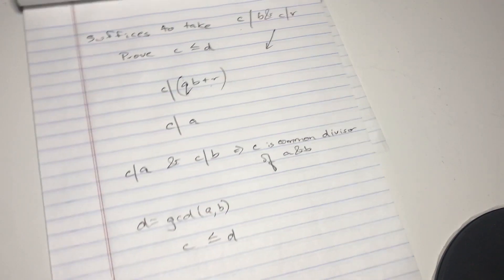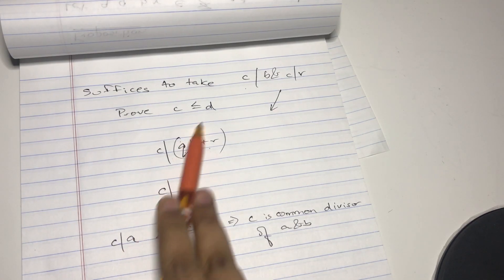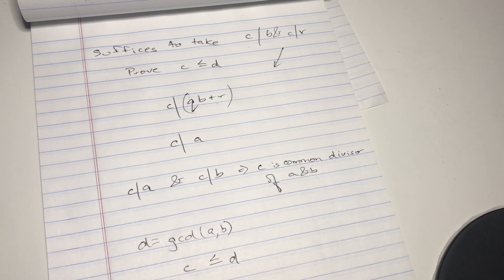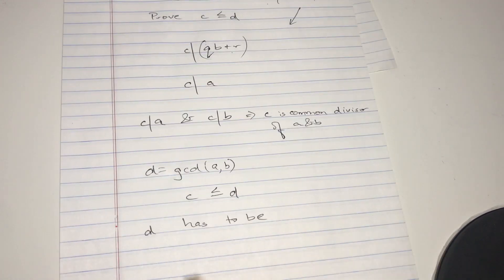And which is actually what we set out to prove, that c is less than or equal to d. Therefore, we have that d has to be the gcd of b and r.